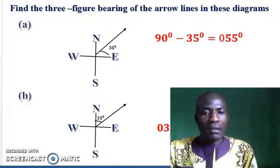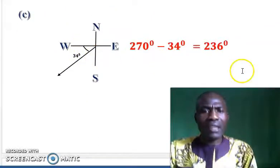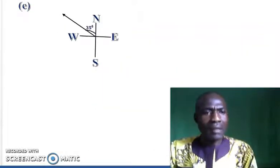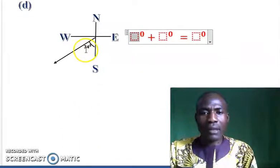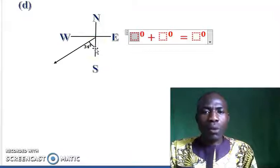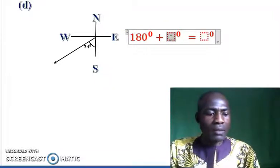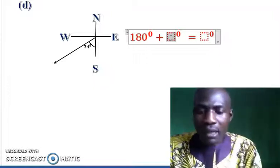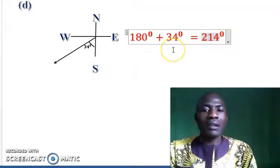Now, for instance, if that 34 degrees is positioned differently, let's take that as example D. In this case, our 34 is here. We know due south is 180 degrees — from north to south is 180 degrees. So we add 180 plus 34 to get the three-figure bearing: 180 plus 34 equals 214 degrees as our three-figure bearing.